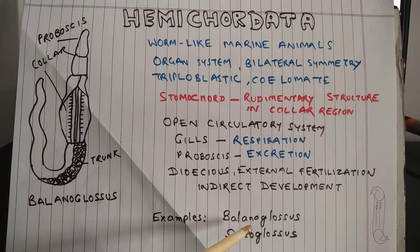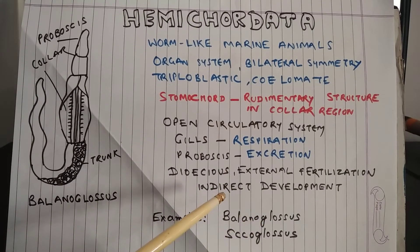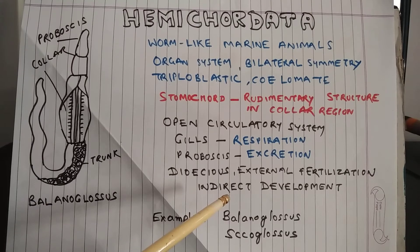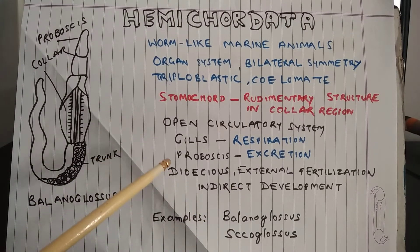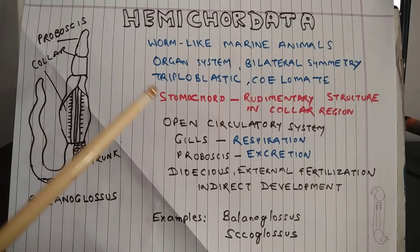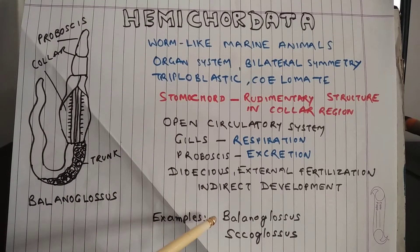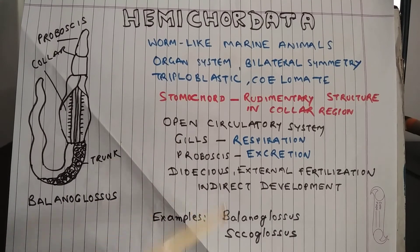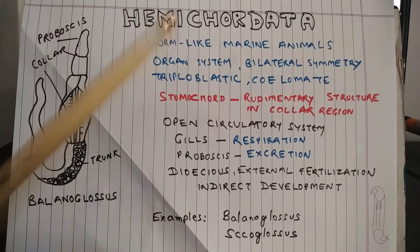Development is indirect, so there is a larval stage before the adult stage. Examples of hemichordates are Balanoglossus and Saccoglossus. This diagram shown is of Balanoglossus.